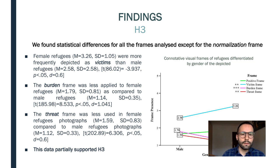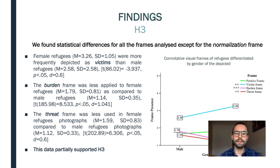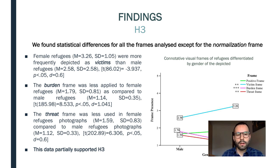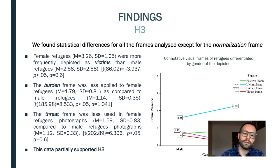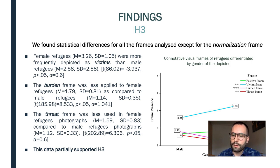Lastly, regarding the connotative frames, we found statistical differences for all frames except the normalization frame. Female refugees were more frequently depicted as victims than male refugees, while male refugees were more often depicted as a possible burden and as a possible threat to European societies than female refugees. We can see the figures and effect sizes here. This data virtually confirmed hypothesis 3.